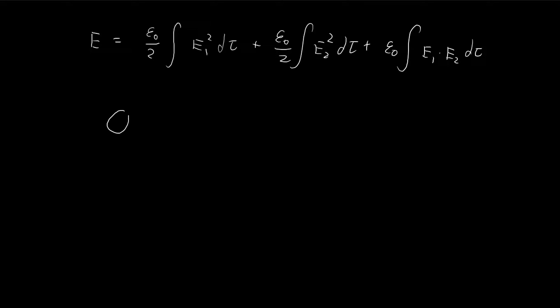So for our configuration, we have two spherical shells, one with radius A, one with radius B. And then earlier in the book, David Griffiths actually proved that the energy required to construct a spherical shell is equal to 1 over 8 pi epsilon q squared divided by R. So R is going to be the radius of your shell.